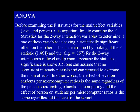Before examining the F statistics for the main effect variables, level and person, it is important first to examine the F statistics for the two-way interaction variables to determine if one variable is having a statistically significant effect on the other. This is determined by looking at the F statistic of 1.461, and the significance equals .197 for the two-way interactions of level and person. Because the statistical significance is above .05, one can assume that no significant interaction exists and can proceed to examine the main effects. In other words, the effect of level on students per microcomputer ratios is the same regardless of the person coordinating educational computing, and the effect of person is the same regardless of the level of the school.